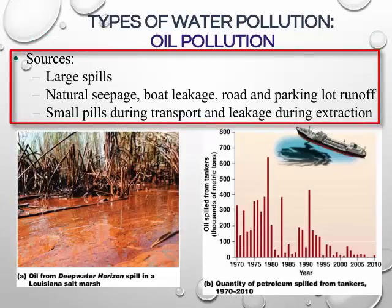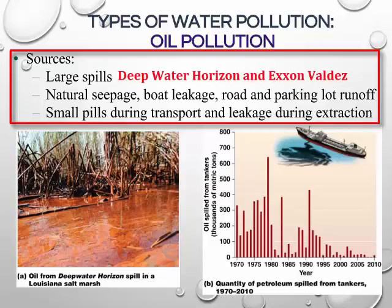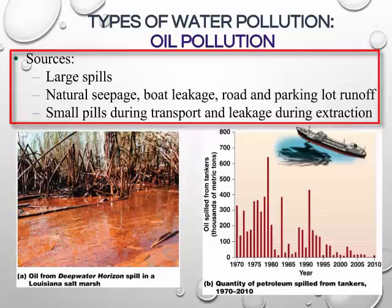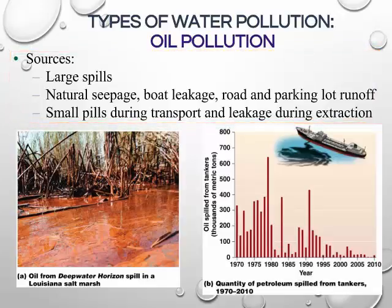Oil pollution comes from large catastrophic spills such as the Deepwater Horizon or Exxon Valdez, natural seepage, boat leakage, runoff from city streets, and small spills during transport and extraction. The largest oil spill in U.S. history occurred in 2010 when the Deepwater Horizon drilling platform exploded in the Gulf of Mexico, killing 11 and causing over 200 million gallons of crude oil to spill for 87 days.